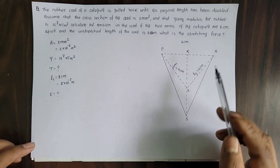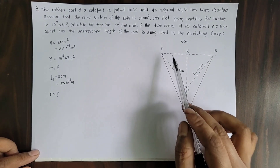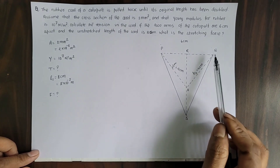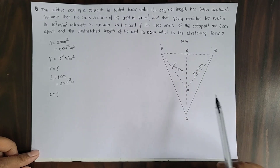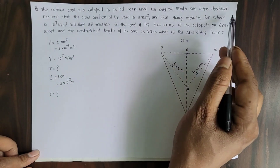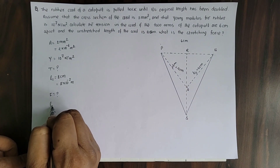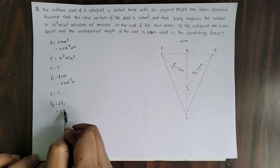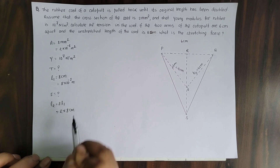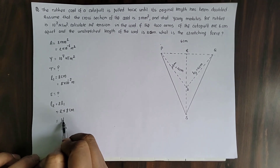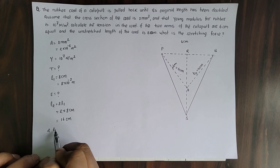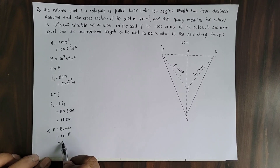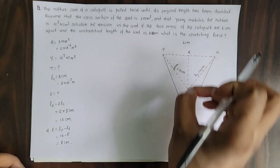To solve this question, we draw a diagram. P and Q are the two arms of the catapult. The unstressed length of the cord of the catapult is PQ. When the rubber cord is stressed, the length doubles — so the final length L₂ equals 2 times L₁, that is 2×8 cm = 16 cm. The elongation is L₂ minus L₁, which equals 16 minus 8 = 8 cm.